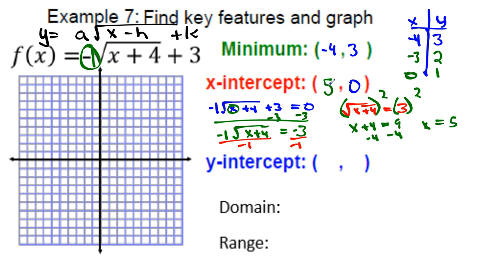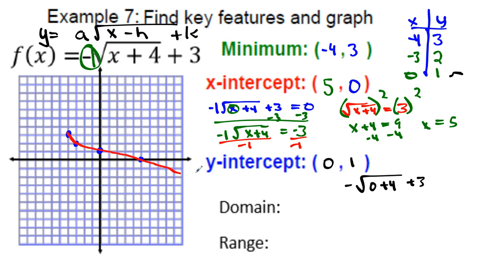For the y-intercept, plug in x = 0: −√(0 + 4) + 3 = −√4 + 3 = −2 + 3 = 1. So the y-intercept is (0, 1), which matches the table. Plot the points: (−4, 3), (−3, 2), (0, 1), and (5, 0). The graph opens downward because of the negative a value.